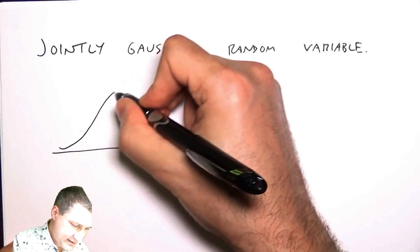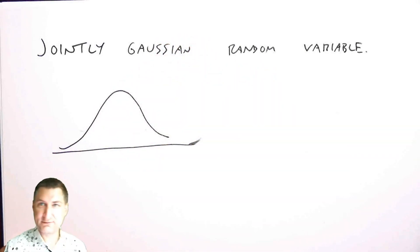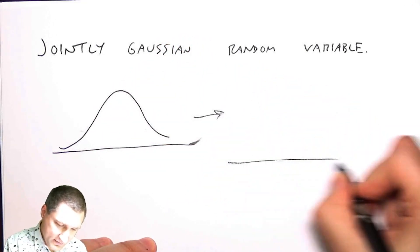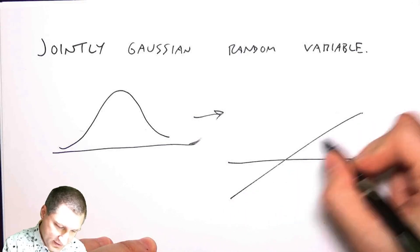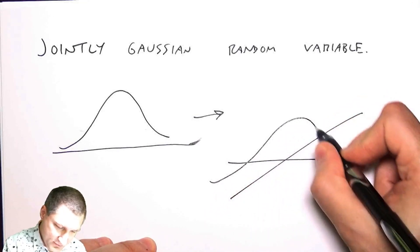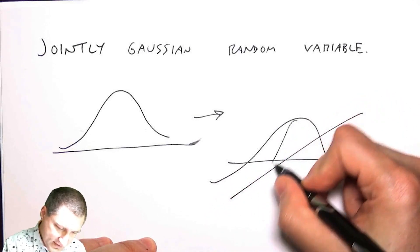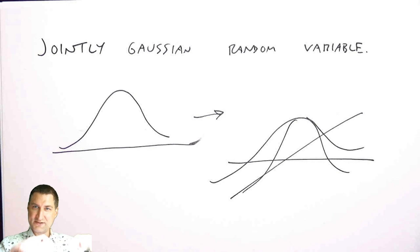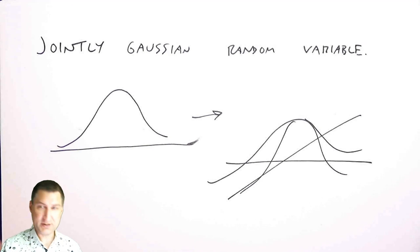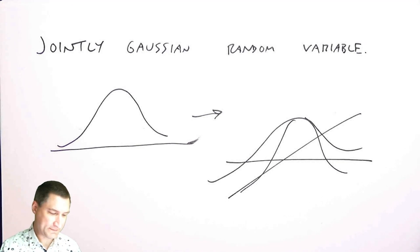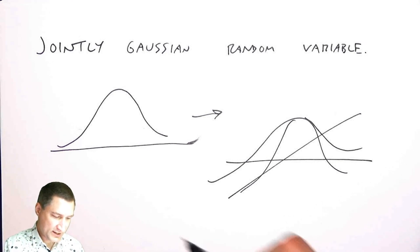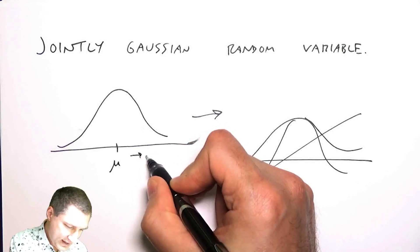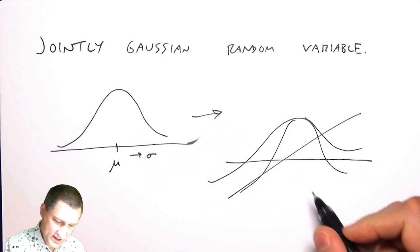The PDF in 1D looks like a bell curve, so we know in advance that the PDF in 2D is going to look like a hill rising up from the 2D plane. And so here I need to specify the mean and the variance.